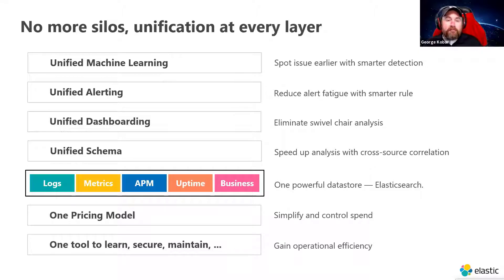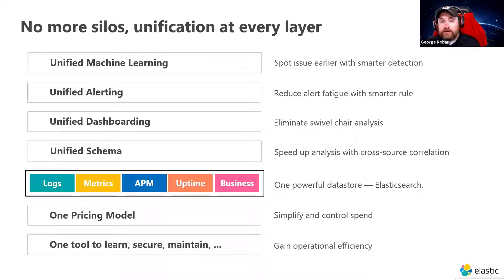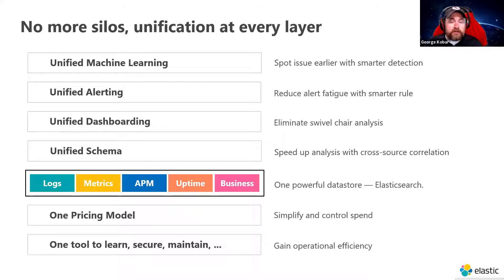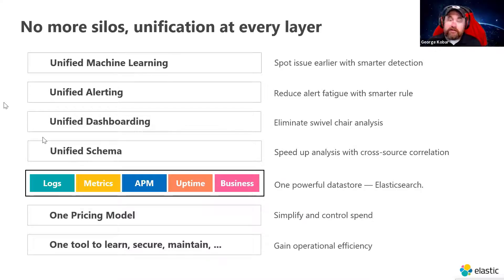We're breaking down all these silos and unifying everything: all this data is ingested into Elasticsearch and Kibana visualizes it. You can spot issues earlier with machine learning, alerting, and unified dashboards — no multiple tools to log into or interpret. It's one pricing model and one tool to learn, secure, and maintain. Observability is just one use case; many people also use Elasticsearch for SIEM/security, application search, and more — all on the same core Elastic stack.